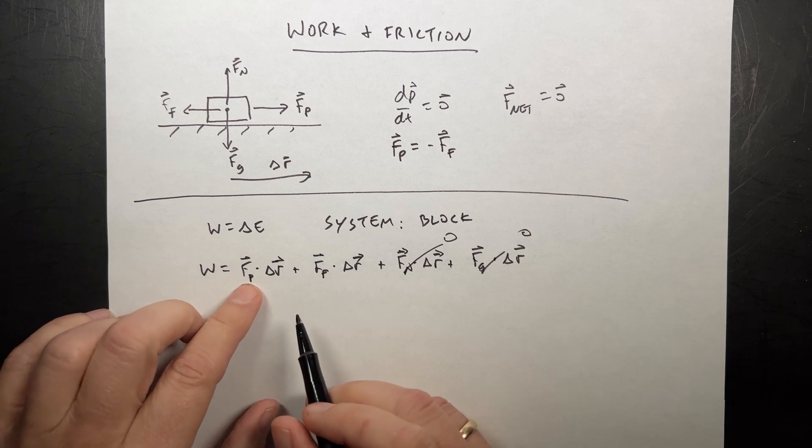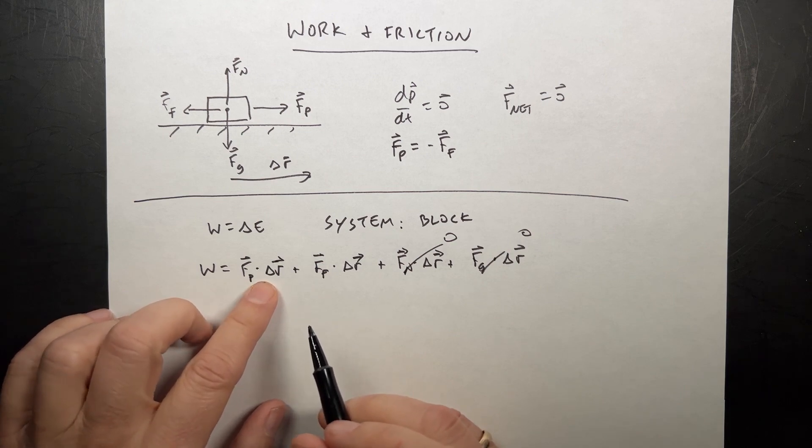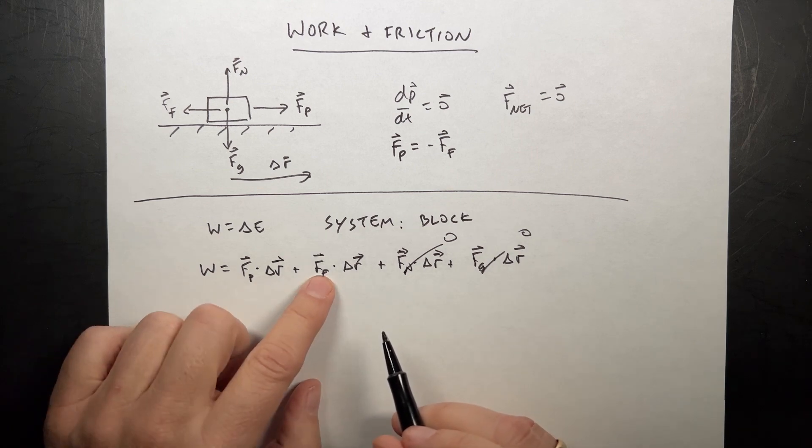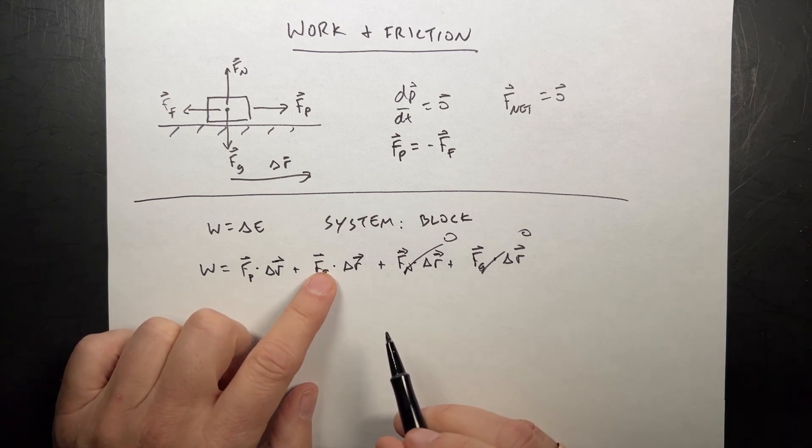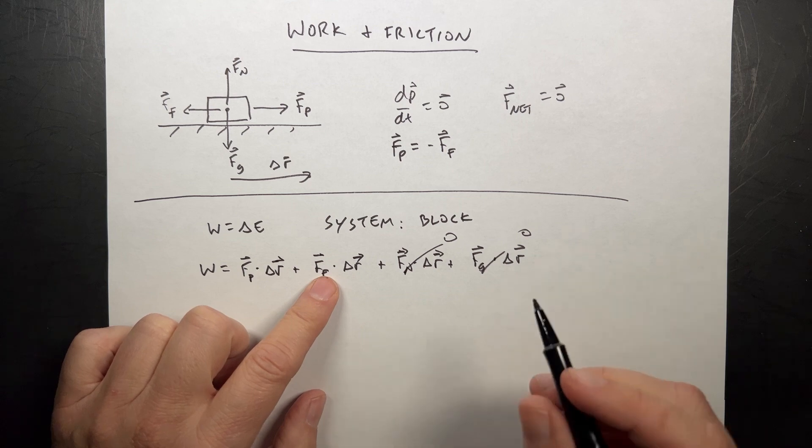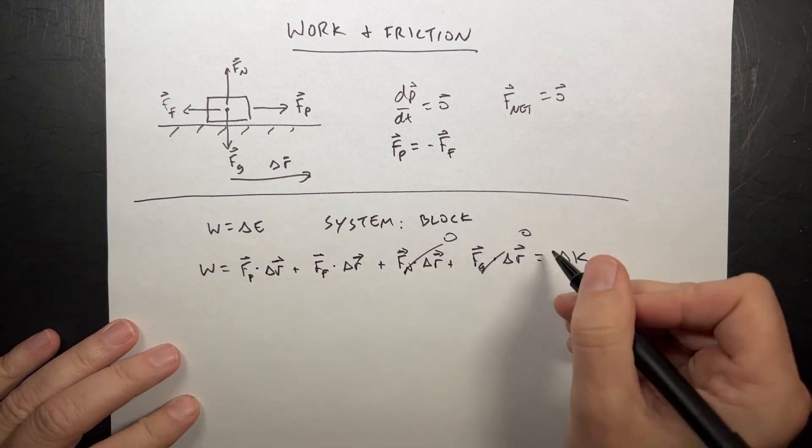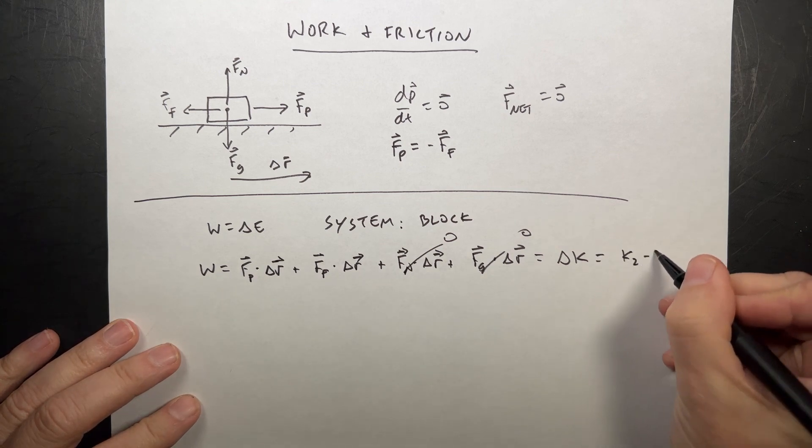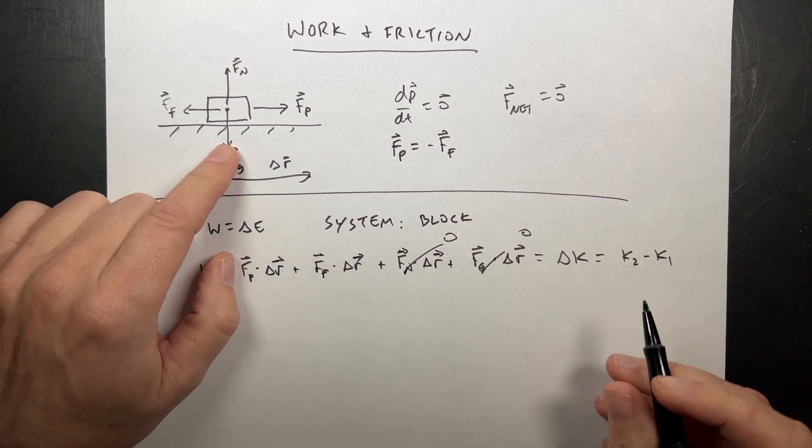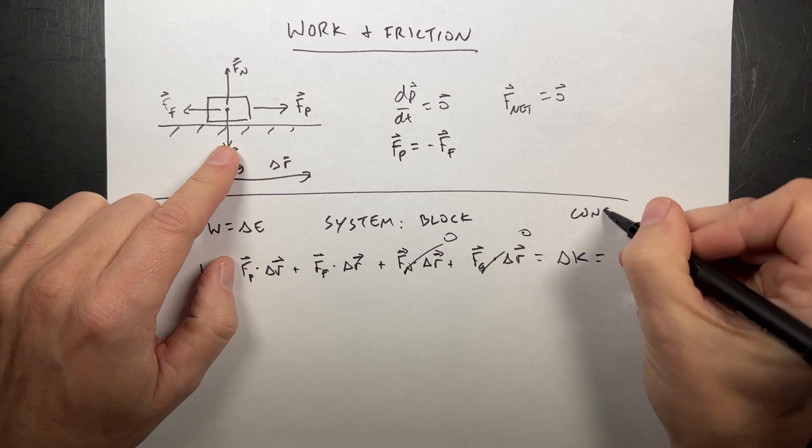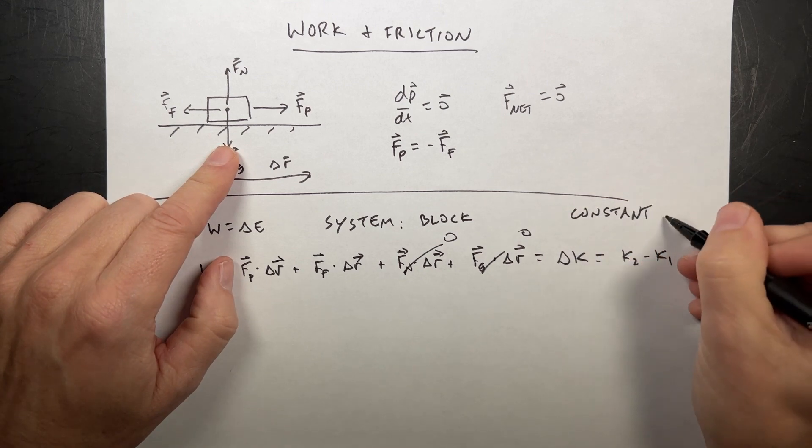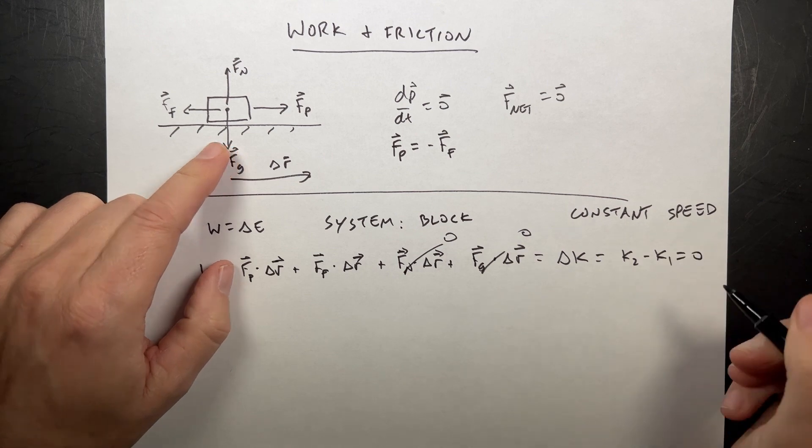The force of the push is not zero. I know it's some value. I also know that this is going to do a negative work because pushing against that. But if that's my system, I have this is the change in kinetic energy. So that's going to be K2 minus K1. But I'm moving at a constant speed.